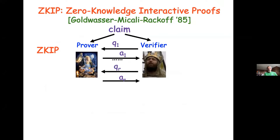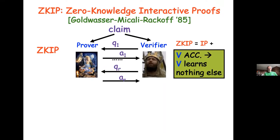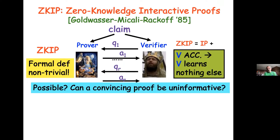Zero-knowledge proof systems are interactive proof systems, just like I defined, except that you add another demand which looks totally unreasonable: you demand that if the verifier accepts — the case when it's a theorem — the verifier learns nothing about anything, not what the proof the prover has in mind. The prover convinces the verifier of the correctness of the claim, but nothing beyond that. The main question is: is it possible to prove anything without giving any information? Can a convincing proof be uninformative?